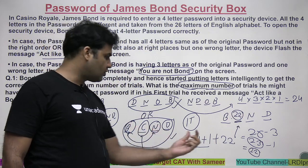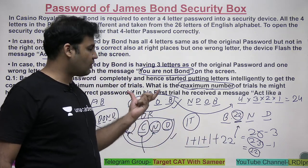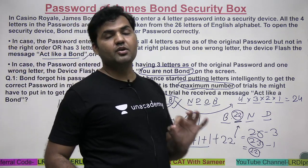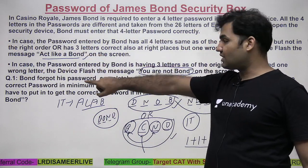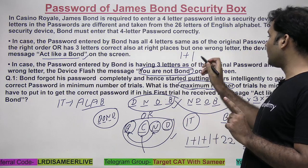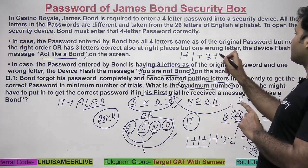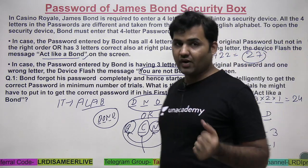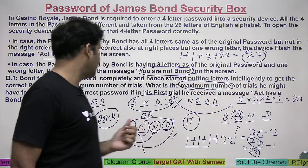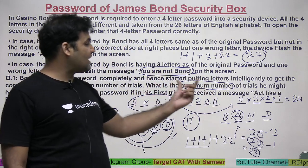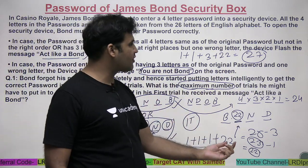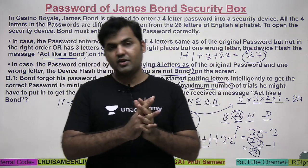Adding it all up: 22 trials to find the correct second letter, plus 3 trials to identify which letter is wrong, plus 1 trial to determine whether all four letters are correct or three are correct with one wrong, plus 1 for the initial trial where 'act like a Bond' was received — that gives 22 + 3 + 1 + 1 = 27. The maximum number of trials is 27. Some may think 24, but the question asks for the maximum trials needed under the minimum trial strategy.